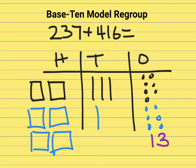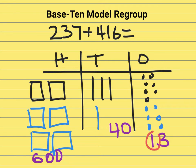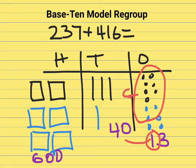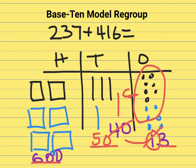In the tens place I have 40. In the hundreds place I have 600. I've got this 10 in the ones place — I have to push that 10 over. There's 7, 8, 9, 10. This right here is the 10. I push it over — and now I've got 50 instead of 40. The 600 is fine. There's 50 and the 3 here. So the answer is 653.